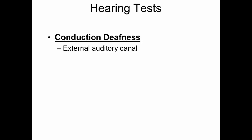Conduction deafness occurs if there is some blockage of the conduction of sound from the outside to the vestibulocochlear nerve. This could be because of a blockage in the external auditory canal, damage to the tympanum such as extra scar tissue or a tear, or the ear ossicles may not vibrate appropriately. If there is an ear infection and the middle ear is full of fluid, the ear ossicles don't vibrate as efficiently as they should.